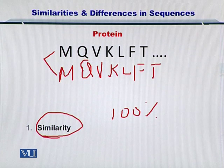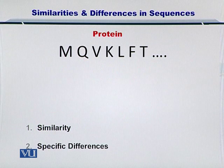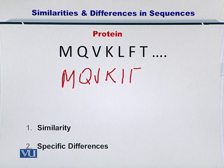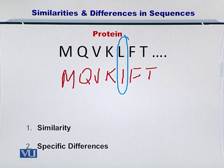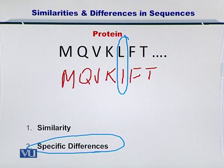However, it can be the case that you are trying to compare two sequences wherein there are differences in their amino acids or nucleotides. For specific differences, if you have another protein sequence, you can argue that there is a difference between the two sequences in leucine and isoleucine. So by looking at specific differences, you can see how two sequences differ from each other, and in this case the similarity will obviously be less than 100%.